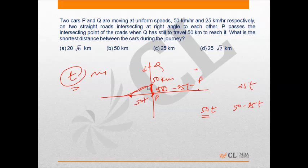Now in this triangle we can use Pythagorean theorem, which means the distance between these two cars will be 50t squared plus 50 minus 25t squared, and root of this.